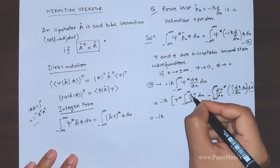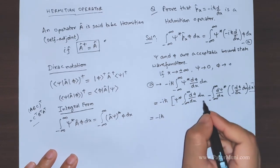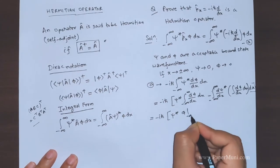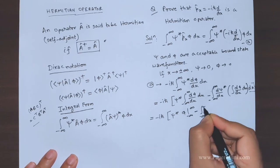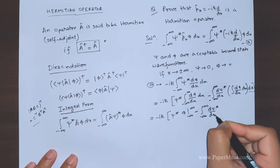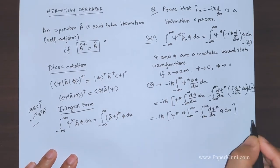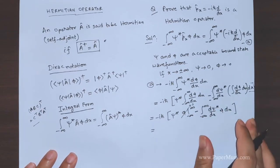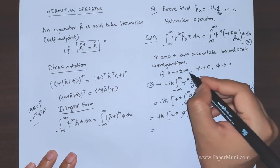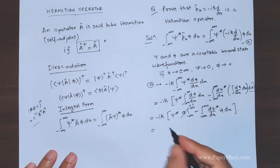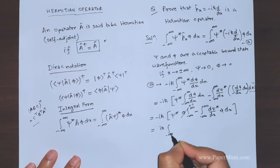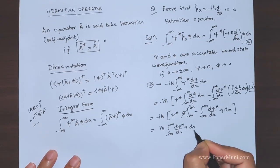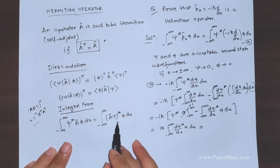Integration by parts: we integrate d(phi)/dx, giving us the boundary term psi-star times phi evaluated from minus infinity to plus infinity, minus the integral of (d(psi-star)/dx) times phi dx. The boundary term goes to zero because phi and psi are both acceptable bound-state wave functions that vanish at plus and minus infinity. So that term is zero, leaving us with i-h-bar times the integral from minus infinity to plus infinity of (d(psi-star)/dx) times phi dx. We need to get this into the required Hermitian form.